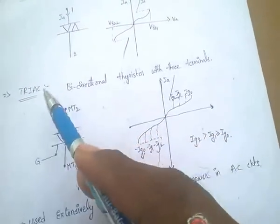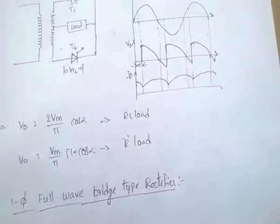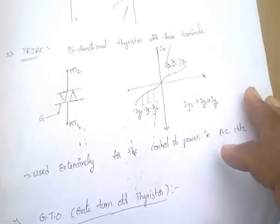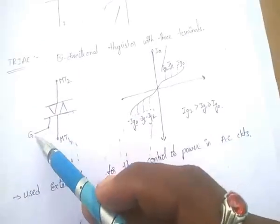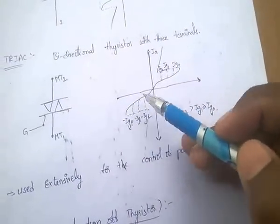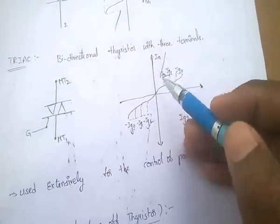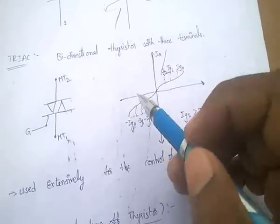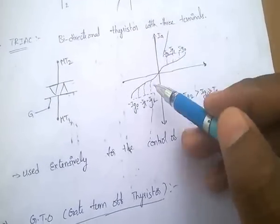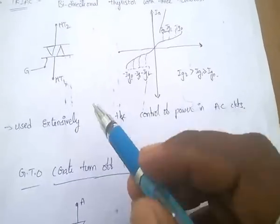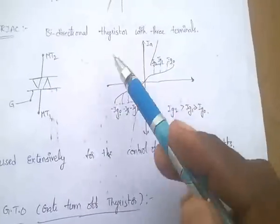TRIAC is a bidirectional thyristor with three terminals. It can pass current in the forward direction and also in the reverse direction. TRIACs are used extensively for the control of power in AC circuits.